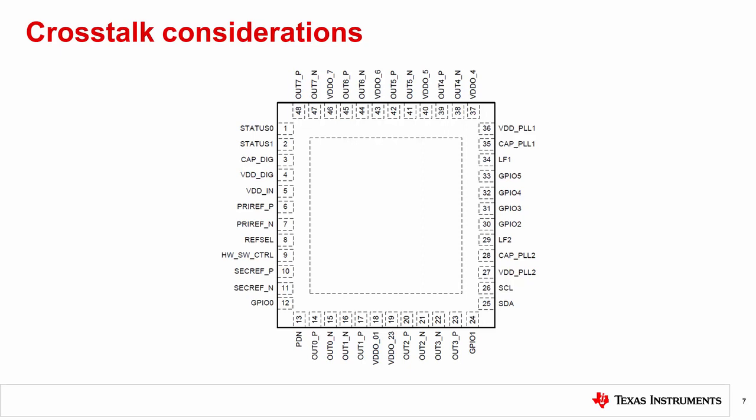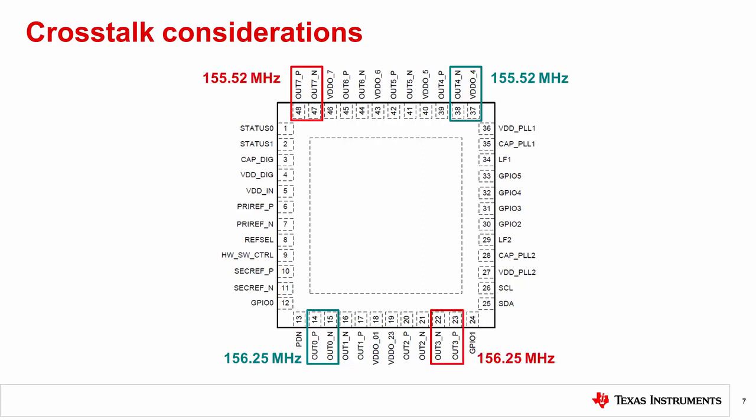For example, if we need both 156.25 MHz and 155.52 MHz out of the same clocking chip, we do not want these two frequencies to be anywhere near each other. Otherwise, there will be crosstalk spurs in the 12 kHz to 20 MHz frequency band. Therefore, place 156.25 MHz at output 0 and 155.52 MHz at output 4. Alternatively, put 156.25 MHz at output 3 and 155.52 MHz at output 7.